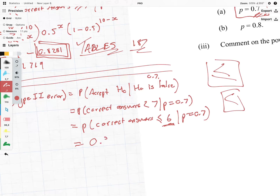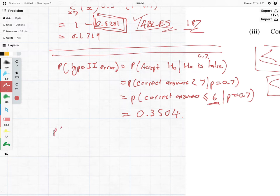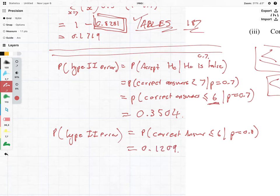You're getting that straight from the table value when n is equal to 10, p is equal to 0.7. And then, what we have here for Type II error, when H0 is equal to 0.8, again, we're going to have the probability correct answers less than or equal to 6, given that p is equal to 0.8, straight from the tables, 0.1209. So that's not too tricky, maybe the hard part was adjusting that, but otherwise, this is basically just testing to see did you read through the material that dealt with Type I and Type II errors.